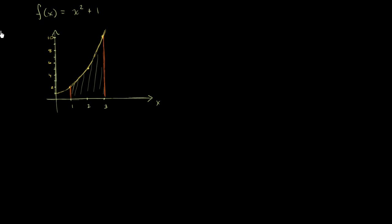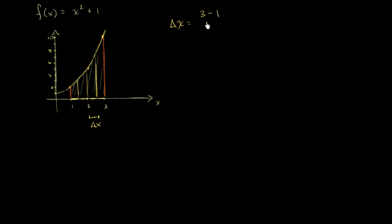Let's think about what those rectangles look like — four rectangles of equal width. Let's think about what the widths have to be. We'll call that width delta x. Delta x is the total distance traveled in x: we finish at 3, we started at 1, and we want four equal-width rectangles, so delta x equals one half.